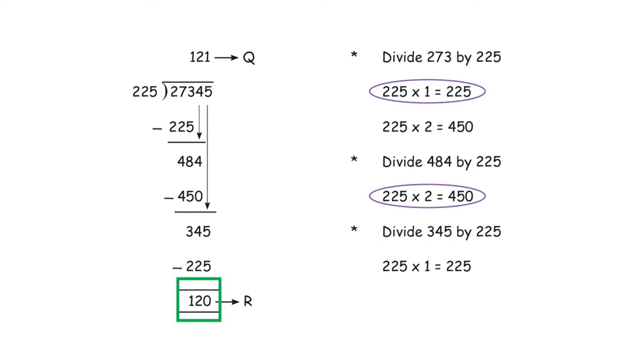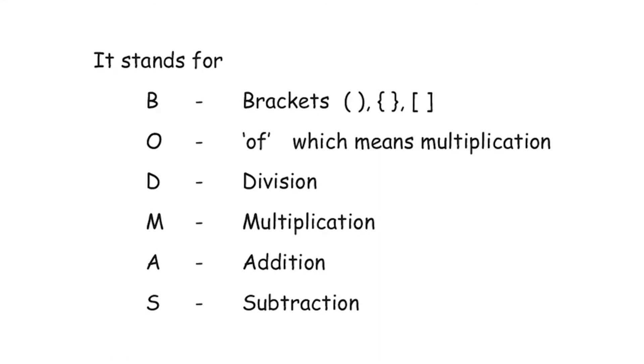This is how we solve division with large numbers. We've now learned addition, subtraction, multiplication, and division of large numbers. What if a mathematical expression has all these operators? To avoid confusion, we follow a rule called BODMAS: B for Brackets, O for Of, D for Division, M for Multiplication, A for Addition, and S for Subtraction.